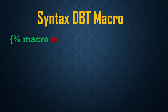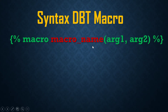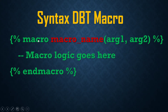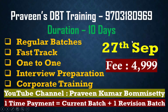Next is the syntax. The syntax starts with the macro keyword, followed by the macro name, then the arguments. Our logic will be written inside the macro block, and the macro ends with an end-macro tag. So: macro, name of the macro, number of arguments, then logic, then end macro.